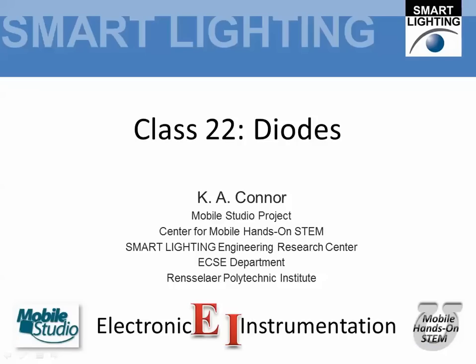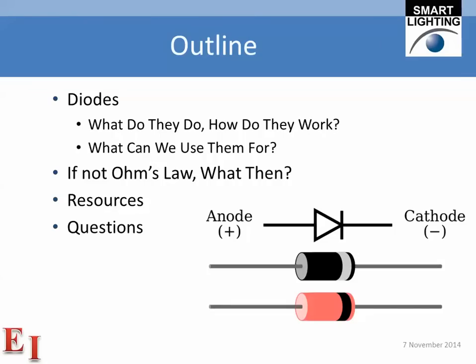The last circuit component we will be considering in this course, and the subject of our last experiment — experiment 8 — is the diode. We'll be looking at what they do, how they work, and what we can use them for. We find that we can't use something like Ohm's law to characterize the relationship between voltage and current. And then we'll end with the usual resources and questions.